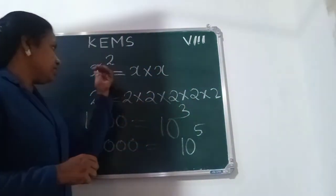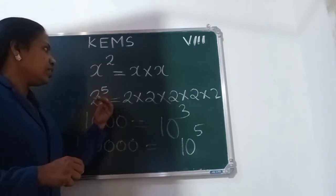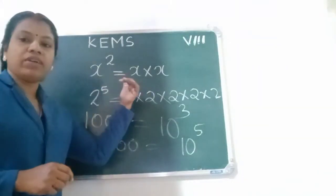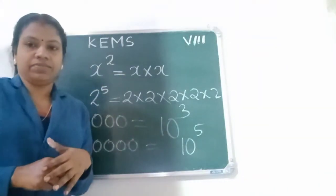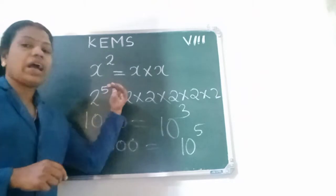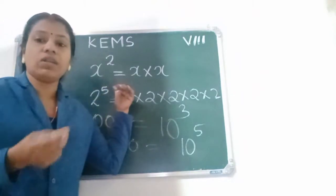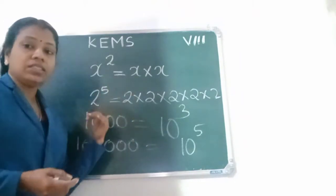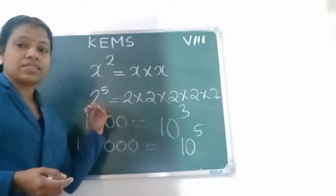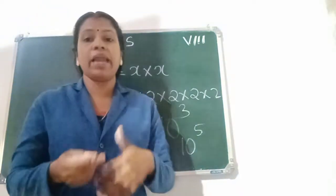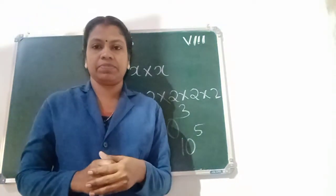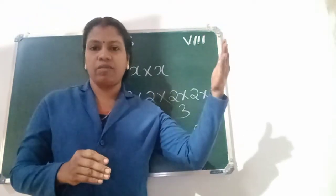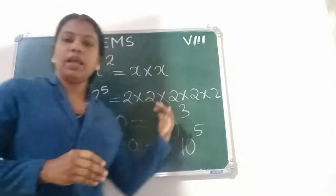In the number 2 power 5: 5 is called the power and 2 is called the base — the base number. Power and base.